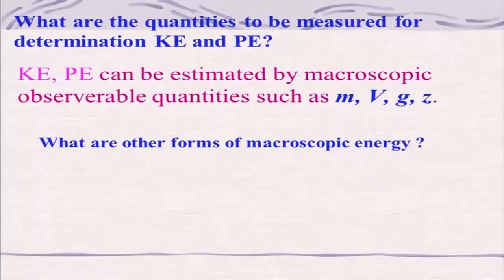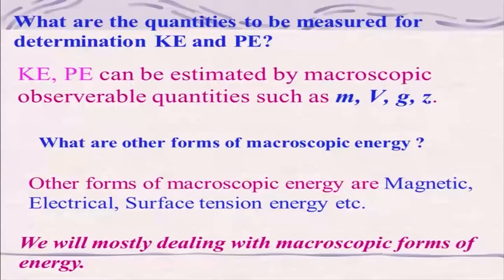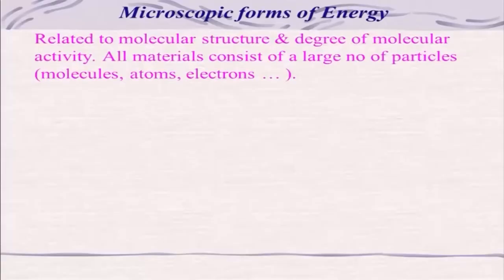What are the other forms of microscopic energy? Besides kinetic and potential, there are electrical energy, magnetic energy, surface tension energy, and several others. We will be dealing mostly with macroscopic forms of energy in thermodynamics, but I will give a flavor of the various microscopic forms of energy as well.